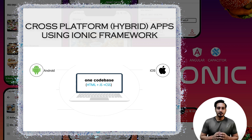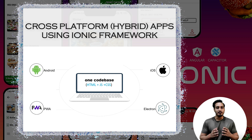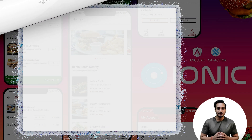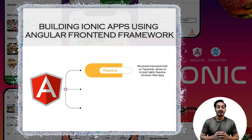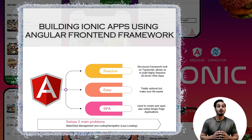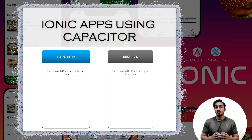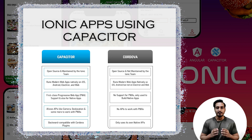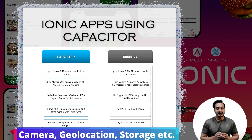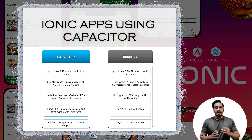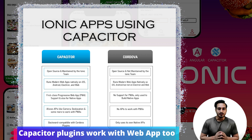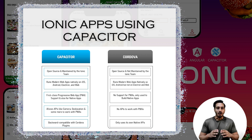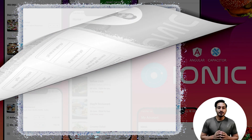Using the same code, we can also build a normal web app that runs in a web browser. We will build Ionic apps using the Angular framework, which is an amazing front-end framework that makes building such apps much easier. For connecting with native device features, Ionic provides two tools: Capacitor and Cordova. In this course we will use Capacitor to deal with native device features such as the camera, geolocation, storage, and a lot more. Its biggest advantage is that most plugins can also be used in a web app, which is not applicable with Cordova.